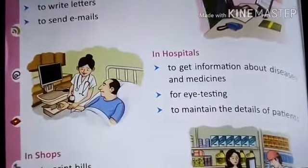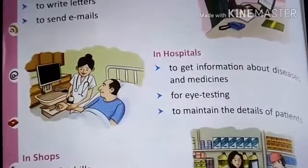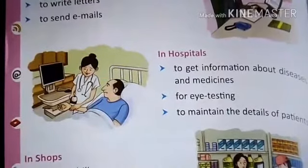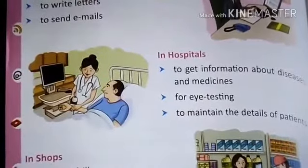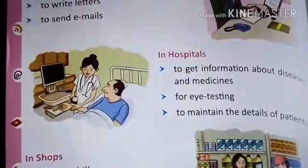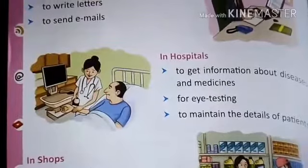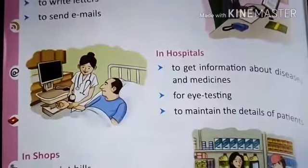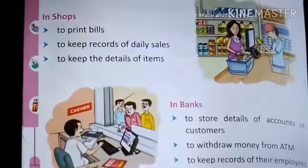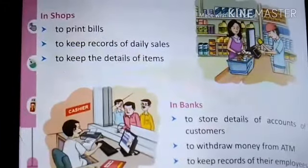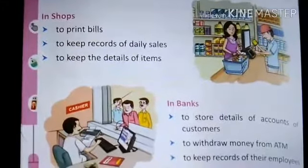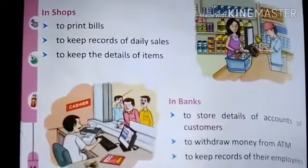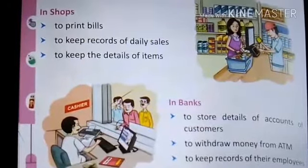Number 4, in hospitals. Computers are used in hospitals to get information about diseases and medicines, for eye testing, and to maintain the details of patients. Number 5, in shops. Computers are used in shops to print bills, to keep records of daily sales, and to keep the details of items.